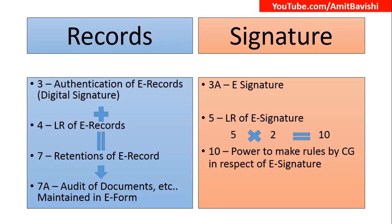Think of it this way — what does an auditor do? An auditor goes and checks the record. So when 'A' for Audit enters the retention area to check the document, we get Section 7A. Section 7A is the audit of documents maintained in electronic form. So: 3 is authentication, 4 is legal recognition, 3 plus 4 equals 7 for retention, and the auditor entering that retention area gives us 7A — audit of documents.